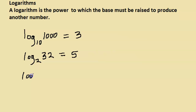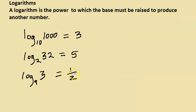What about log 3 base 9? We ask: 9 to which power gives us this value of 3? The answer is 9 to the power of one-half, because 9 to the power of one-half is the same as the square root of 9, which is 3. So log 3 base 9 is equal to one-half.